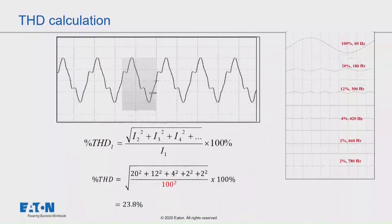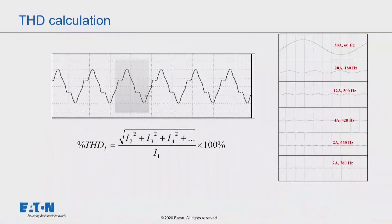Now, let's see what happens if I change the fundamental current. So instead of having 100 amps, I have 50 amps. If I keep my harmonics the same, the third, fifth, seventh, eleventh, thirteenth, the distortion value, the percent distortion, is now double what it was before.